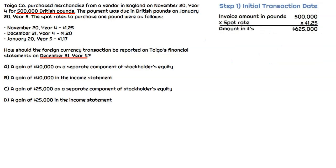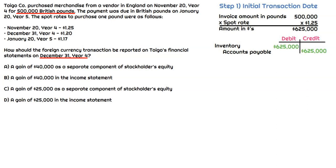Starting with step one, this is the initial transaction date, which is November 20th, year four. Toygo received that invoice for 500,000 pounds. The spot rate on that date is one pound equals $1.25. We multiply by $1.25, and that tells us this invoice is $625,000 in U.S. dollars. Since they're purchasing merchandise, the debit is to inventory and the credit is to accounts payable for $625,000. On the initial date, there is no impact to the income statement and no foreign exchange gain or loss, because we just use the spot rate from the initial date.